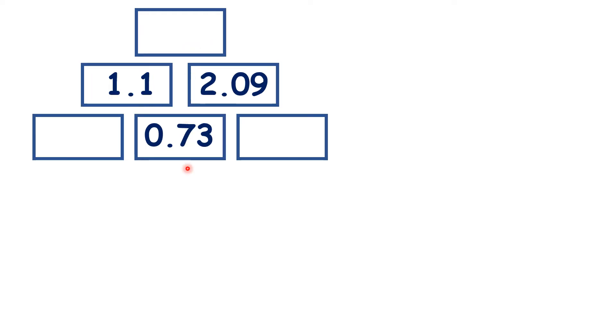Now this is a bit more difficult. Pause the video and see if you can solve the pyramid. So here we have something plus 0.73 equals 1.1. So let's subtract 0.73 from 1.1.